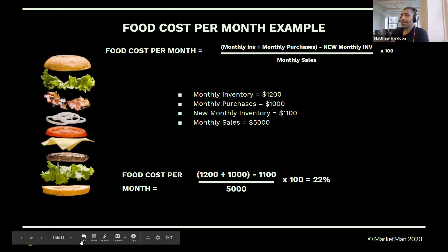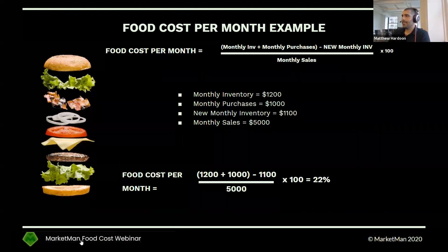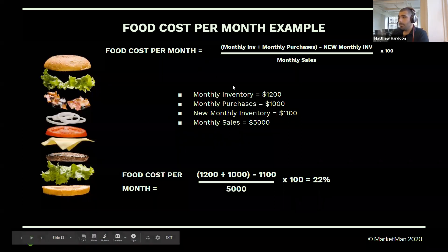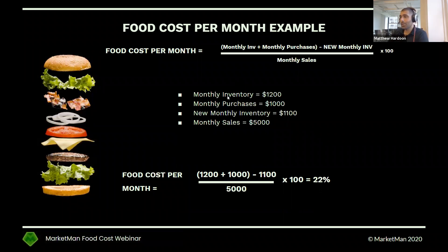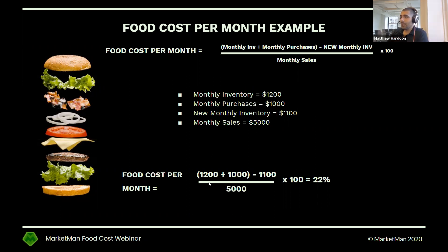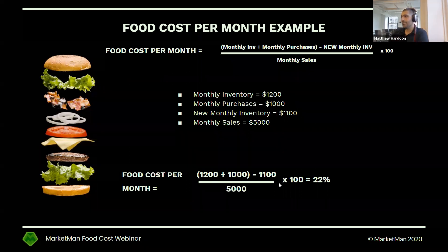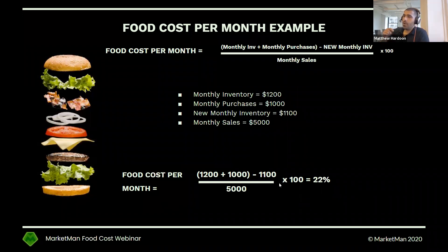Looking at an example of food cost per month: it's the value of your opening inventory count at the beginning of the month, plus the value of everything you've purchased over that month, minus the ending month count — put over total monthly sales and multiplied by 100. So if we had $1,200 worth of inventory, purchased $1,000 worth of inventory, subtracted the ending inventory of $1,100, and put that over $5,000 of monthly sales, we get a 22% overall food cost percentage this month.